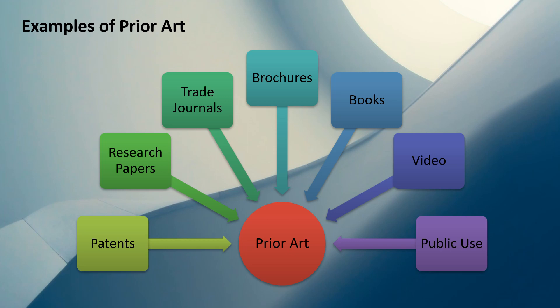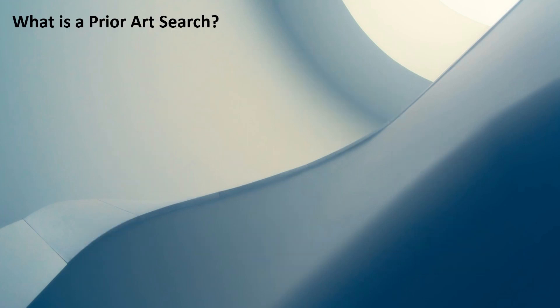These are some examples — prior art covers even more things. Whatever is existing and can be shown as proof is known as prior art. Now let's come back to prior art search.